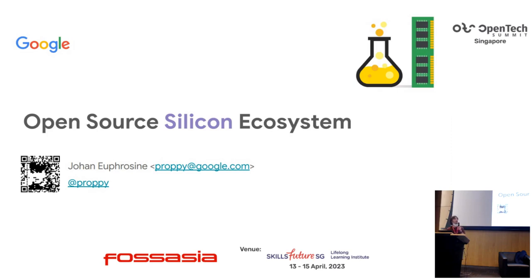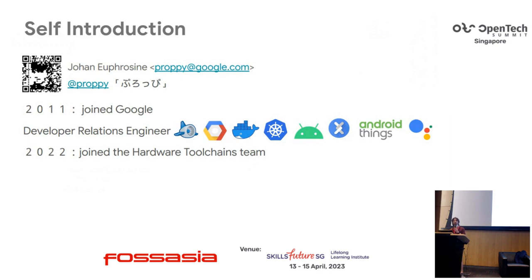Thank you for having me. I'm happy to give a short intro about the open-source silicon ecosystem. My name is Johan Frozin — online I go by Propy. I joined Google about 12 years ago as a developer relations engineer, focusing on improving the developer experience for various Google products, starting with cloud, then Android, then IoT and hardware. This year I joined a new team at Google called the toolchain team, and my presentation is about what this team is doing to build an open-source silicon ecosystem.